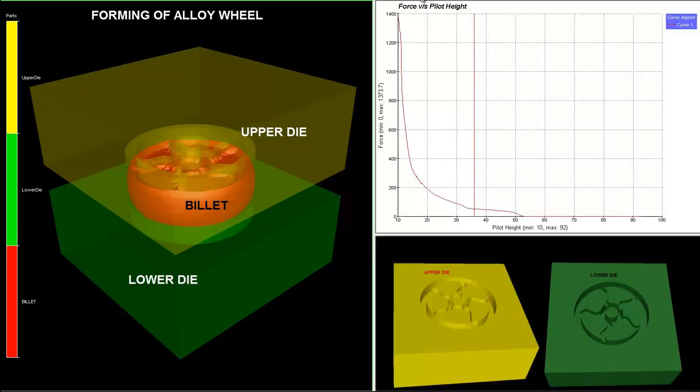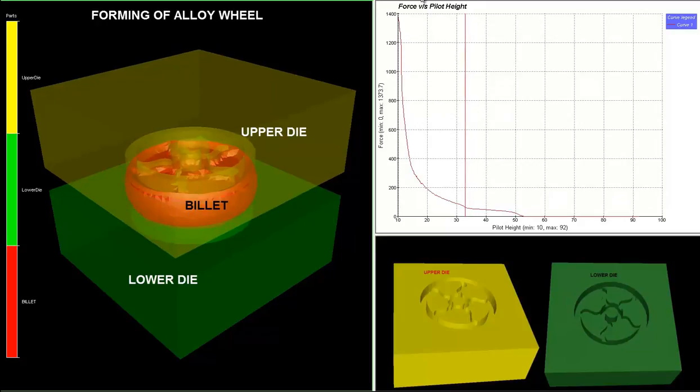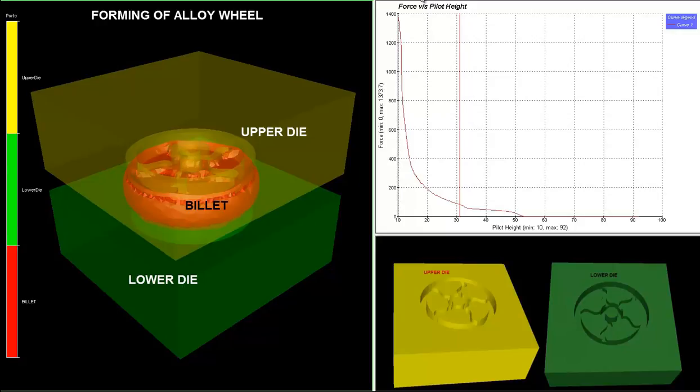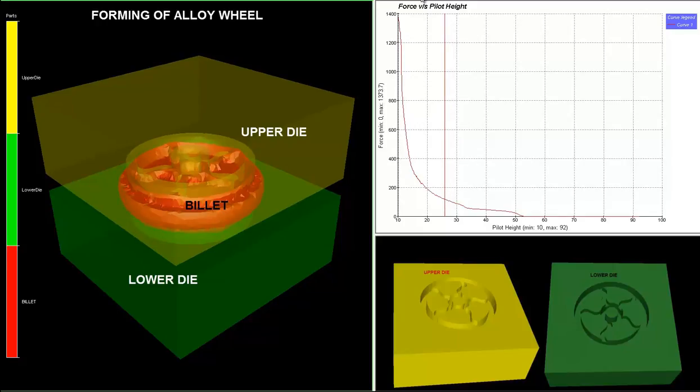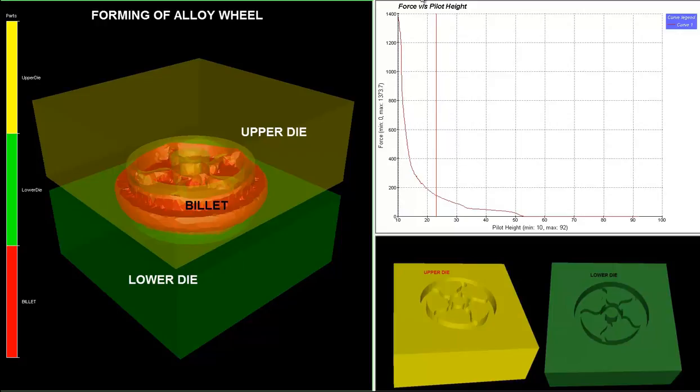The billet is kept at an initial temperature of 350 degrees centigrade and is made of aluminum or magnesium alloy.